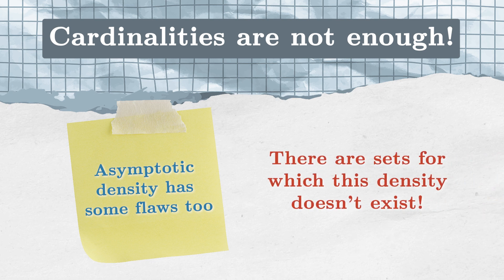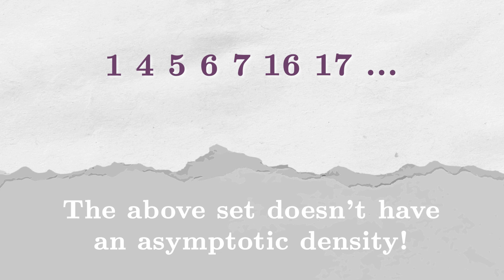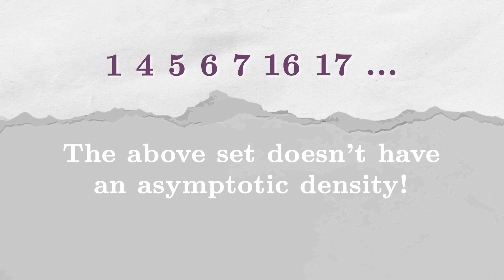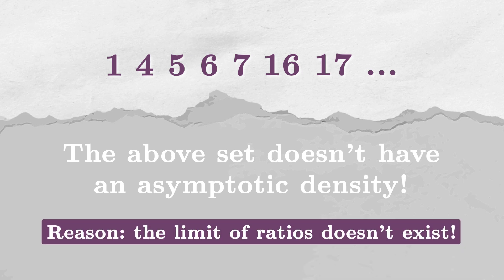For example, there are sets for which this density doesn't exist. Let's divide the sequence of natural numbers into these blocks, each of them being two times longer than the previous one. If we get rid of every second block, we arrive at a set that doesn't have an asymptotic density. The flaw, which causes it, is located in its limit definition. For asymptotic density to exist, we need the limit to exist. And we know for a fact that's not always the case.